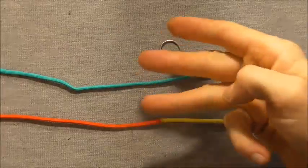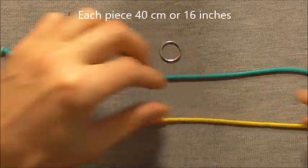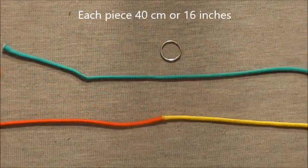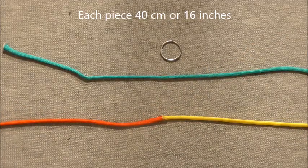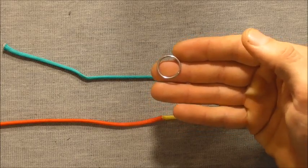To make this I am using three pieces of paracord, each 40 centimeters long or around 16 inches, and of course we are also going to need a split ring.